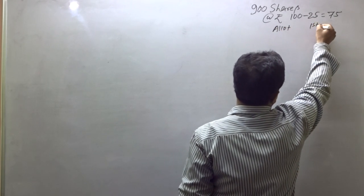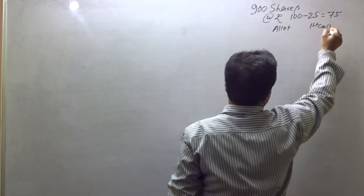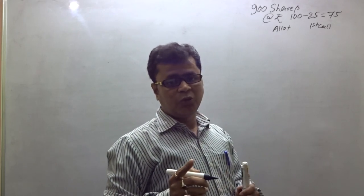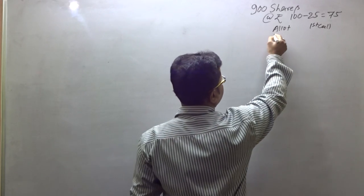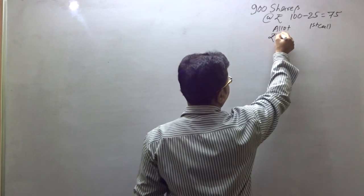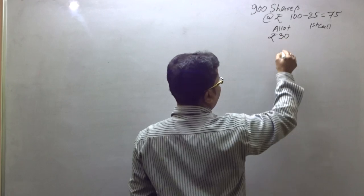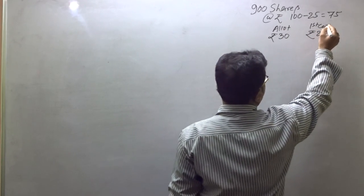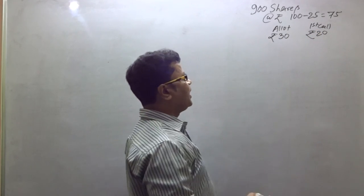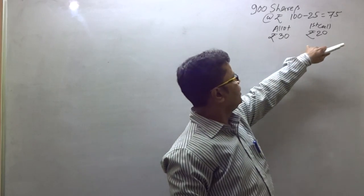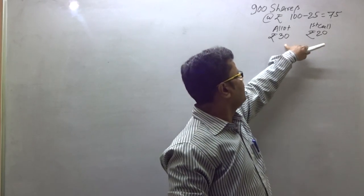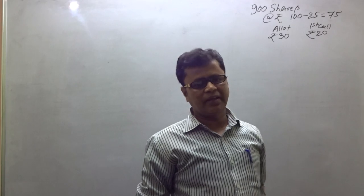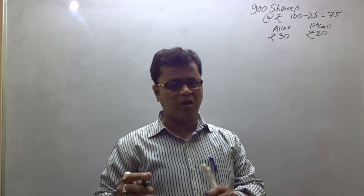The allotment payment is ₹30, and the first call is ₹20 rupees. So allotment ₹30 plus first call ₹20 equals ₹50. So the company has received ₹50, and ₹25 rupees is the balance that was not paid.